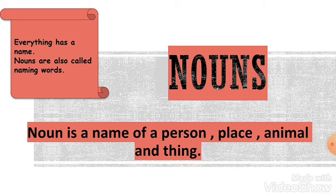For example: the, am, I, on — these are not the name of any person, place, animal or thing. So these words — the, am, I, on — will not be nouns.